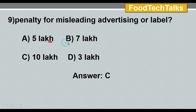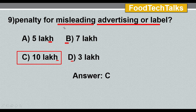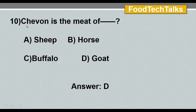Ninth question: penalty for misleading advertising or labeling — options: A) 5 lakh, B) 7 lakh, C) 10 lakh, D) 3 lakh. The answer is option C, 10 lakh rupees. Misleading nature, substance, quality, or false guarantee all come under misleading advertising or labeling. Note: the penalty for misbranding is 3 lakh rupees — be careful not to confuse the two. Misleading advertising is 10 lakh and misbranding is 3 lakh.